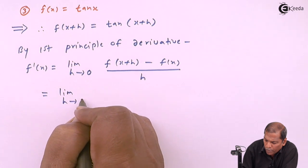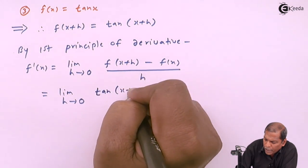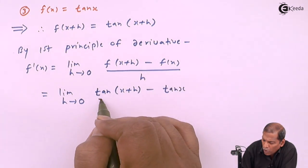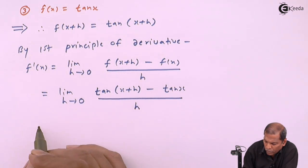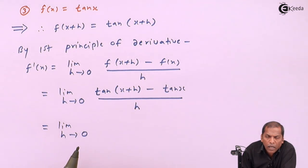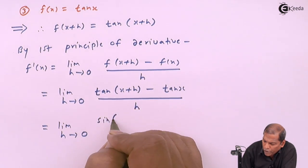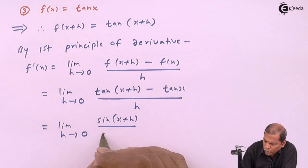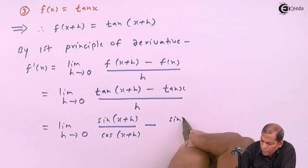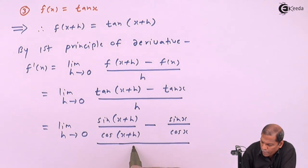That equals limit h tends to zero of tan(x + h) minus tan(x), whole thing divided by h. The next step: since tan(θ) = sin(θ)/cos(θ), tan(x + h) can be written as sin(x + h) upon cos(x + h), minus tan(x) written as sin(x) upon cos(x), and then the whole thing divided by h.